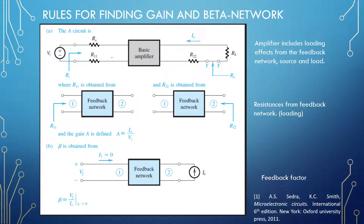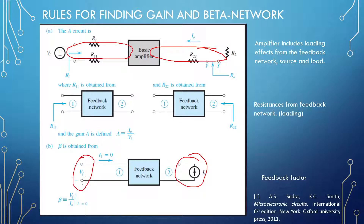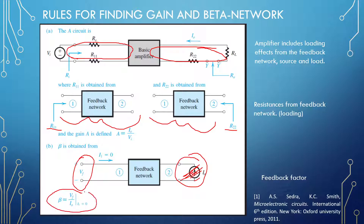The rules for the beta network: everything on the input will be summed and everything on the output will be summed — series-series. The feedback network itself has a current being pushed into the network and a voltage on the other side of the open circuit. When finding R11 and R22, the network becomes an open circuit, and both R11 and R22 are equivalent — just a single resistor Rf. Beta equals the feedback voltage over the output current; the A network equals output current over input voltage.